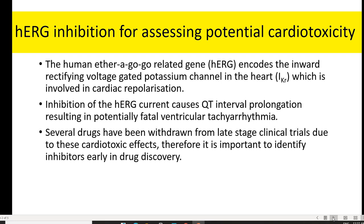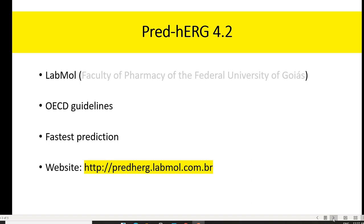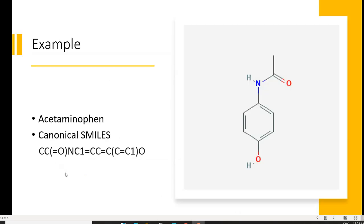Many drugs need to be withdrawn during late-stage clinical trials due to their cardiotoxic effects. Therefore, early identification of potential cardiotoxicity of any chemical moiety or drug-like compound is important in drug discovery. PRED-HERG 4.2 is developed by LabMol, follows OECD guidelines, and is one of the fastest prediction methods. A disadvantage is that cardiotoxicity must be checked for each compound one by one.